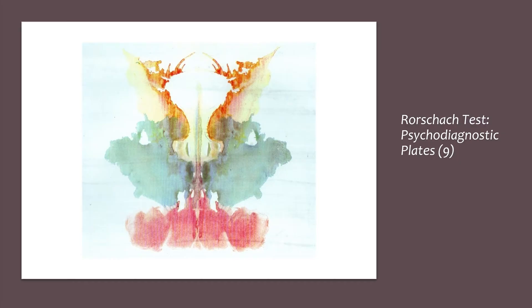Characteristics of card nine include its indistinct form and diffuse muted chromatic features, creating a general vagueness. There is only one popular response and it is the least frequent of all cards. Having difficulty with processing this card may indicate trouble dealing with unstructured data. There weren't many popular responses for this card — the only one noted was from the Beck study, which found that some individuals saw a human figure in the orange blot.